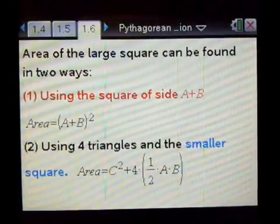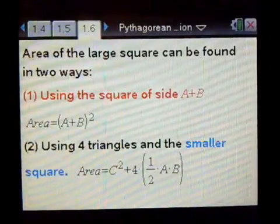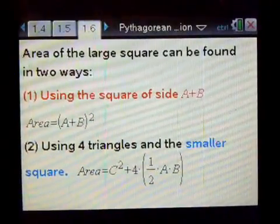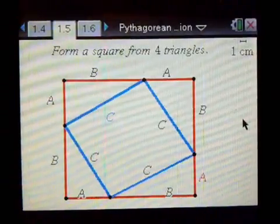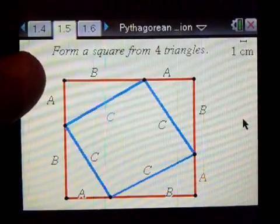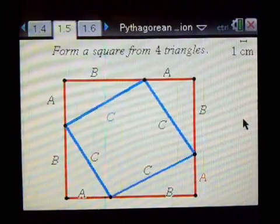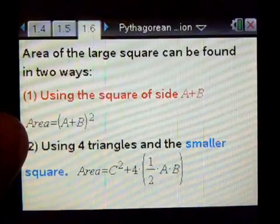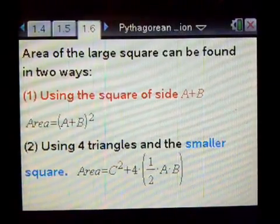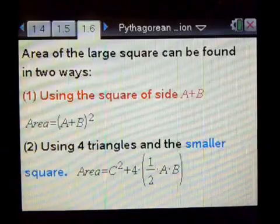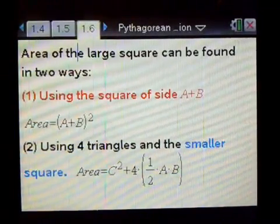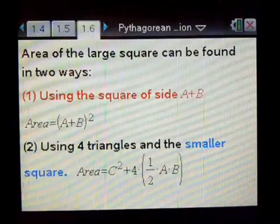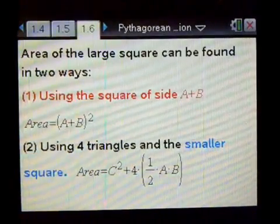We can find the area of the large square in two ways. First, the conventional method. Second, we'll just take the fact that the area can be calculated as the quantity A plus B squared. Or we can use four triangles and the smaller square, which turns out to be C squared plus 4 times 1 half times A times B.